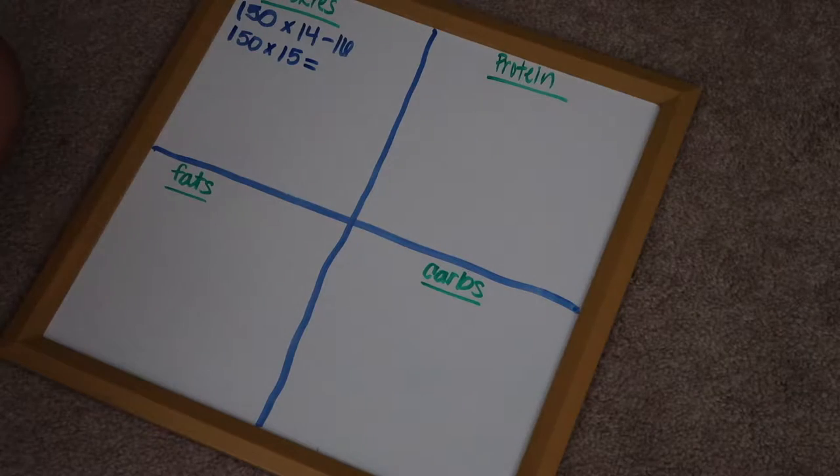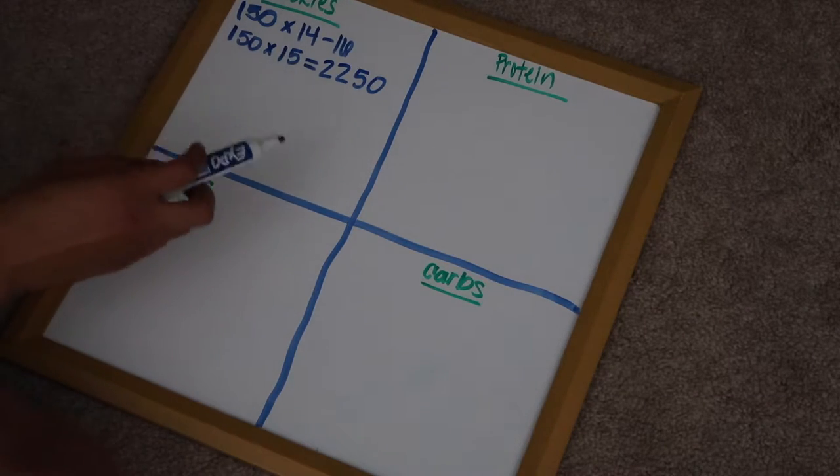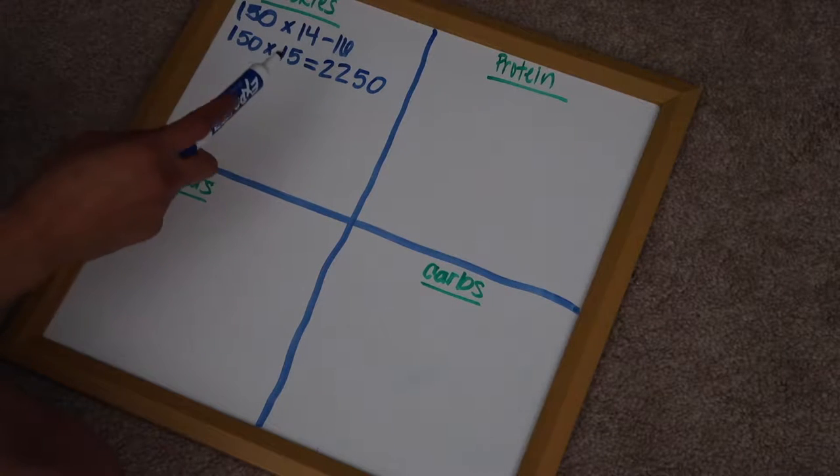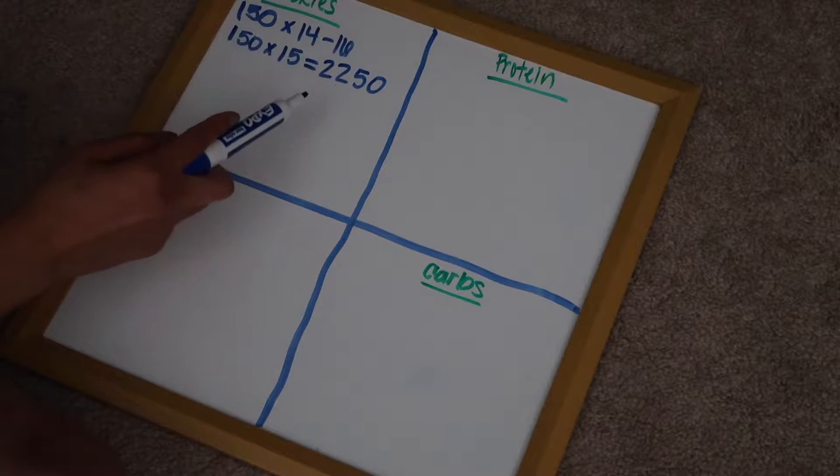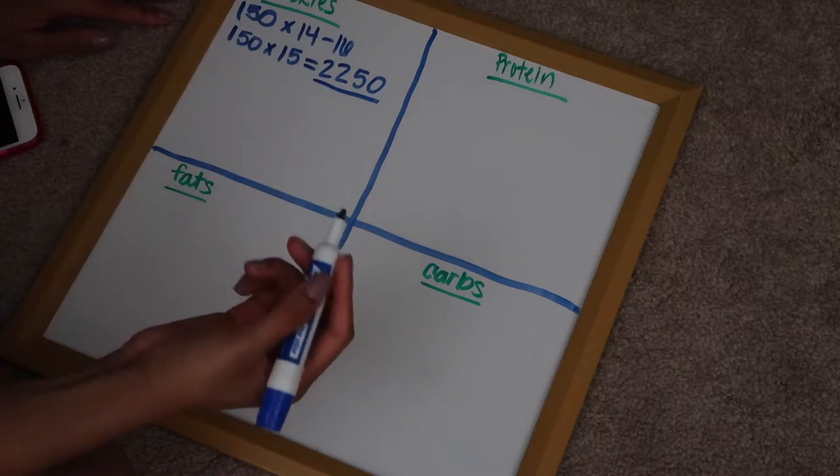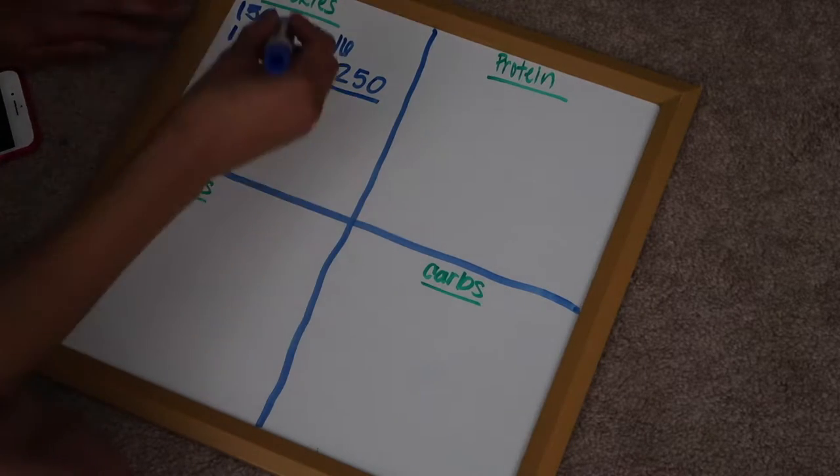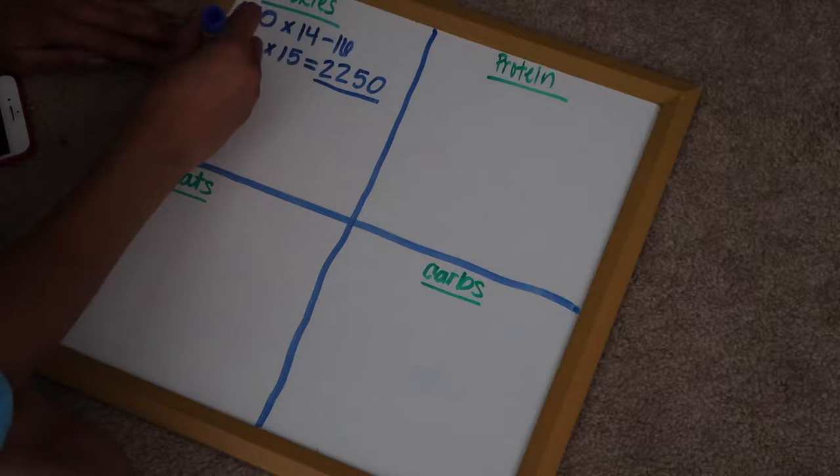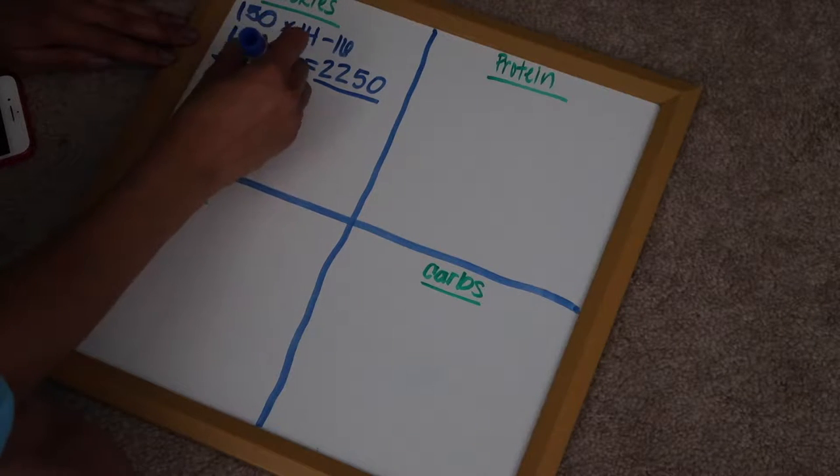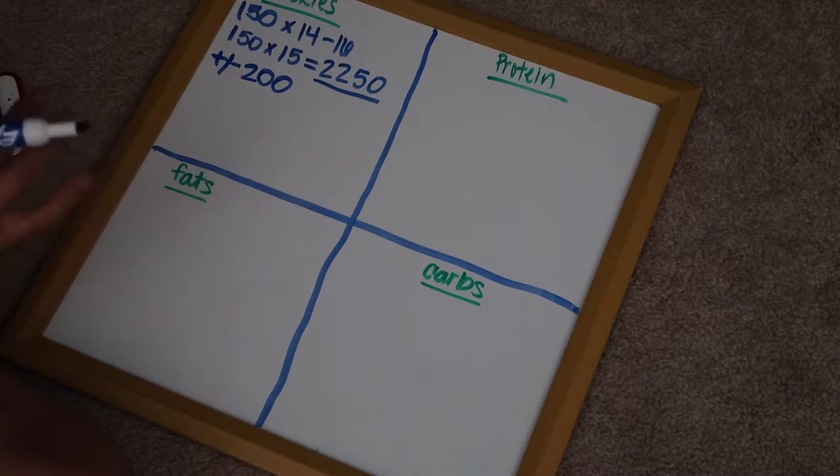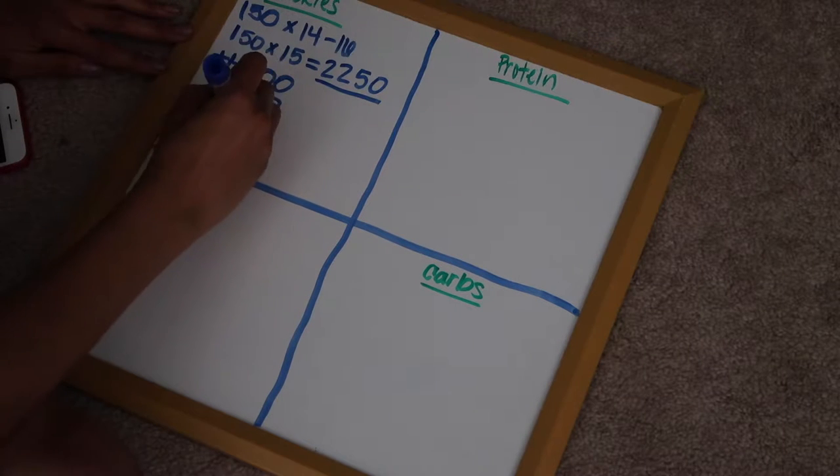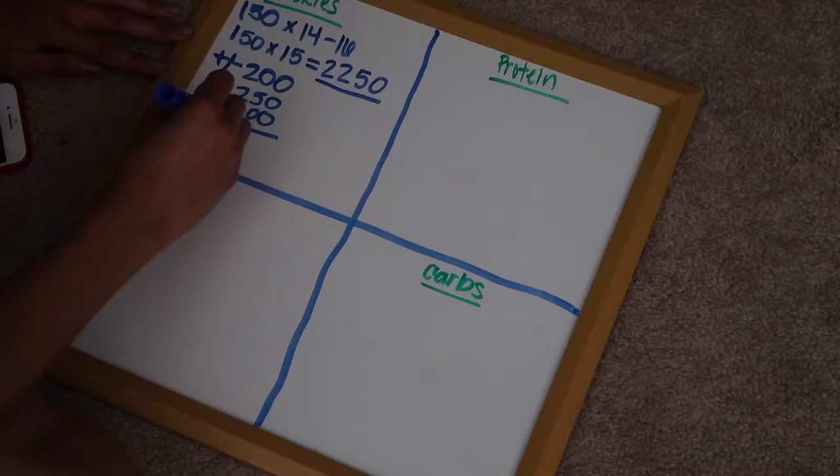So I'm going to go with 150 times 15. And that equals 2250. So this is the amount of calories that I normally burn in a day without having to do anything, without really moving, just my daily maintenance calories. So depending on what your goal is, if you want to, if you're cutting or if you're bulking, you are going to add or subtract around 200 calories.